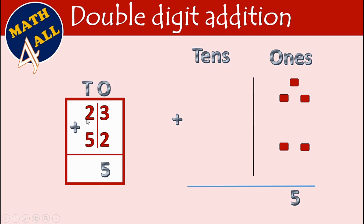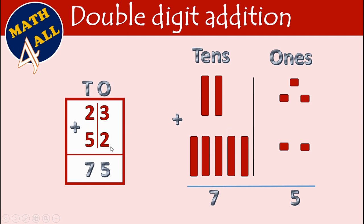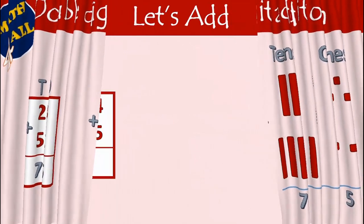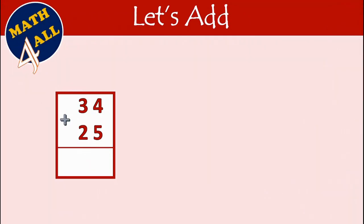Then in the tens place we have two plus five. Count after the bigger number, after five: six, seven. So five plus two equals seven. Write seven in the tens place. Twenty-three plus fifty-two equals seventy-five.